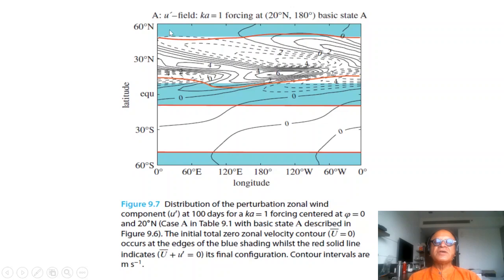This is the first case where we are looking at the perturbation zonal velocity field with the forcing of zonal wave number 1 at 20 north and Dateline with the weak easterly basic state.